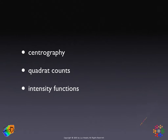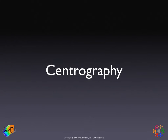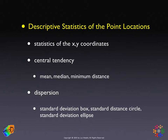Centrography is a simple type of descriptive statistic of the point locations, using the coordinates in the x and y dimension as a random variable. You take the x coordinates and compute the characteristics of their distribution, such as the central tendency and the spread around the central tendency, and do the same for the y coordinates. The obvious measures of central tendency are the mean and the median.